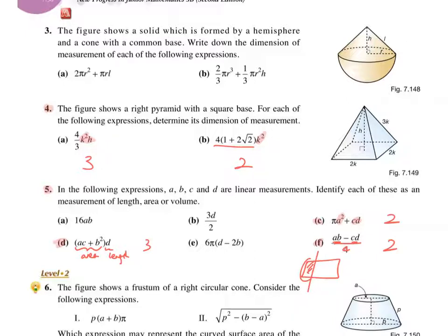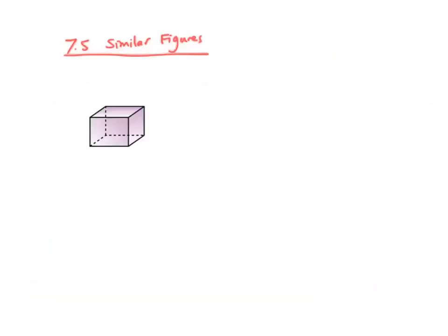And then for 7.4, it's complete. Let's look at 7.5. It is quite similar to the discussion of 7.4. So for 7.5, similar figures, it is actually quite similar to what we learned before about similar triangles. However, now we have to consider the degree as well. It means that we have to consider whether we look at the length, area, or volume.